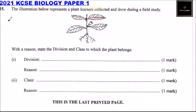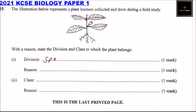Question number 12 of 25. The illustration shows a plant that was observed and drawn during a field study. We have our plant here. State the division and class to which the plant belongs. The plant belongs to the division Spermatophyta. The reason is the presence of flowers.